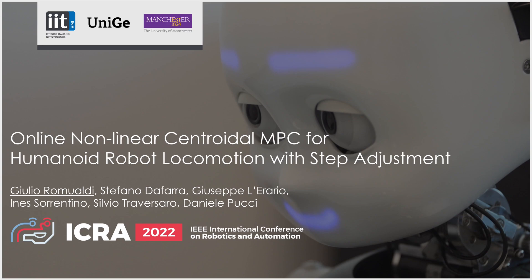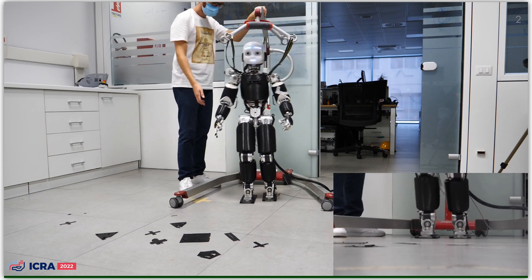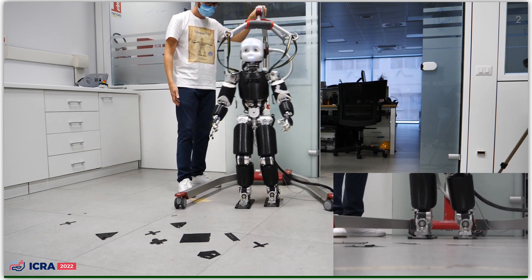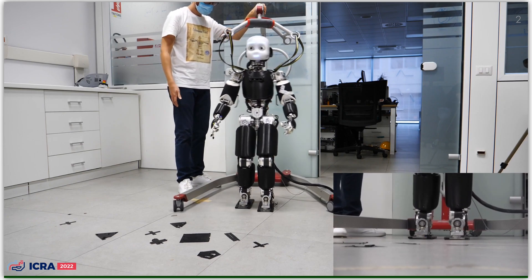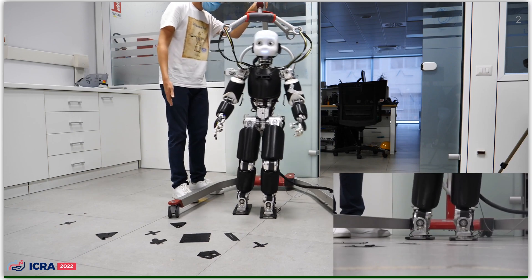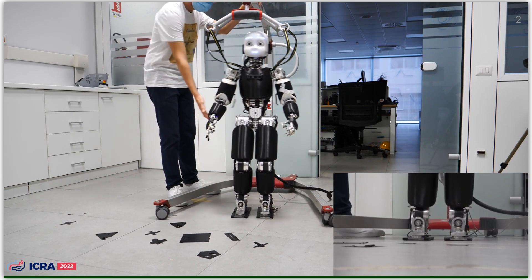This video presents the paper entitled Online Non-Linear Centroidal MPC for human and robot locomotion with step adjustment, accepted for publication in ICRA 2022. When a disturbance acts on the robot, it may be necessary to recompute the contact location considering the robot state to prevent the robot from falling. This paper presents a non-linear model predictive control for human and robot locomotion with online step adjustment capabilities.